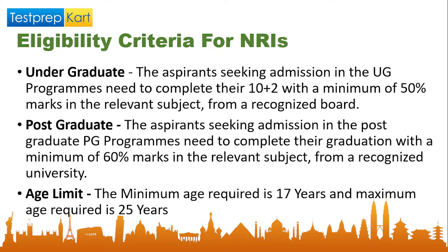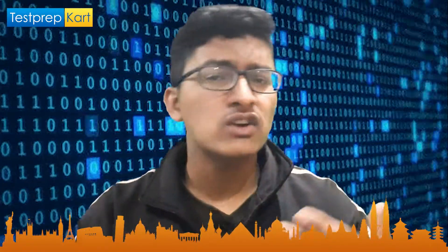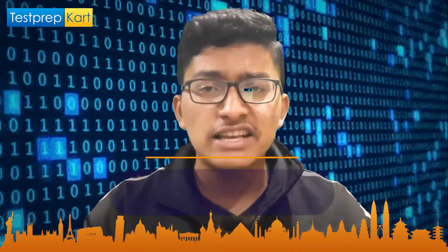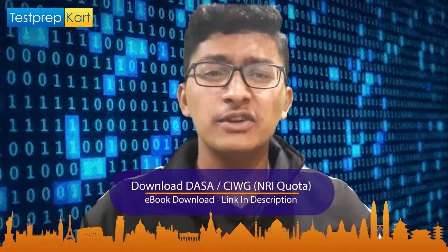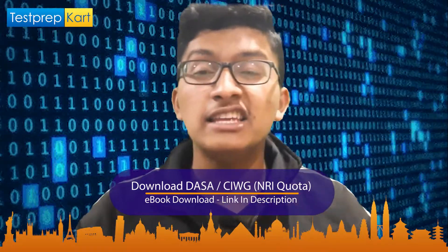For postgraduate courses, you should have a degree from a recognized university in the relevant subject with a minimum of 60 percent marks. The minimum age limit for undergraduate courses is 17 years and the maximum is 25 years. This eligibility criteria is the same for all candidates — whether Indian, NRI, or PIO.